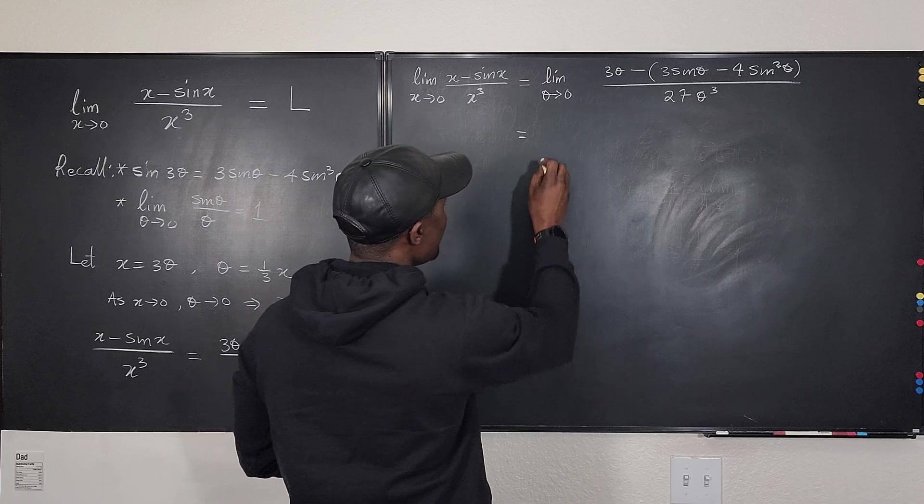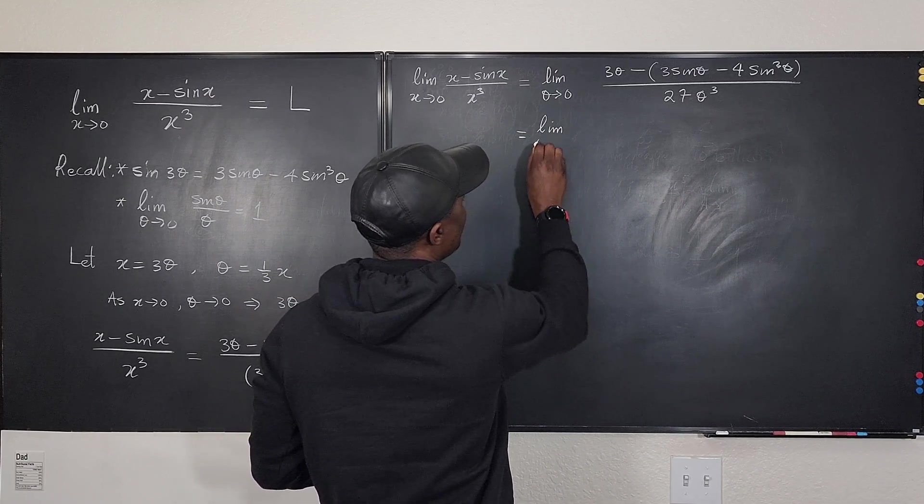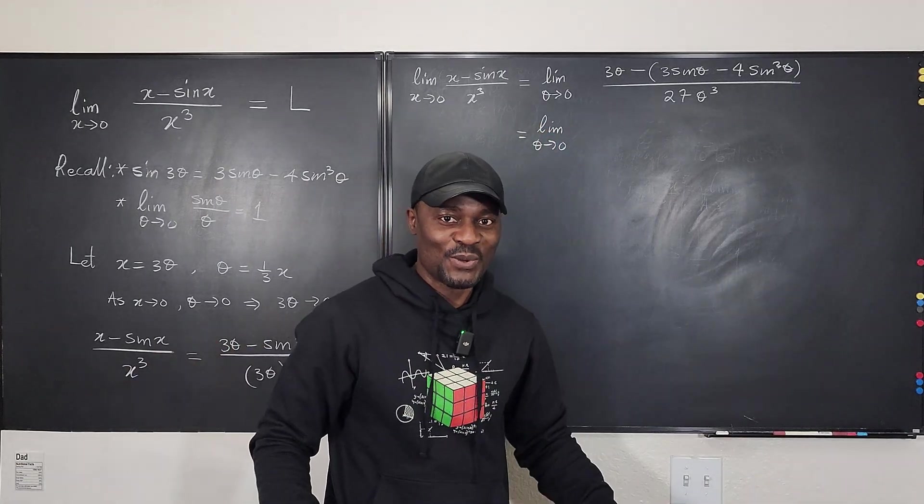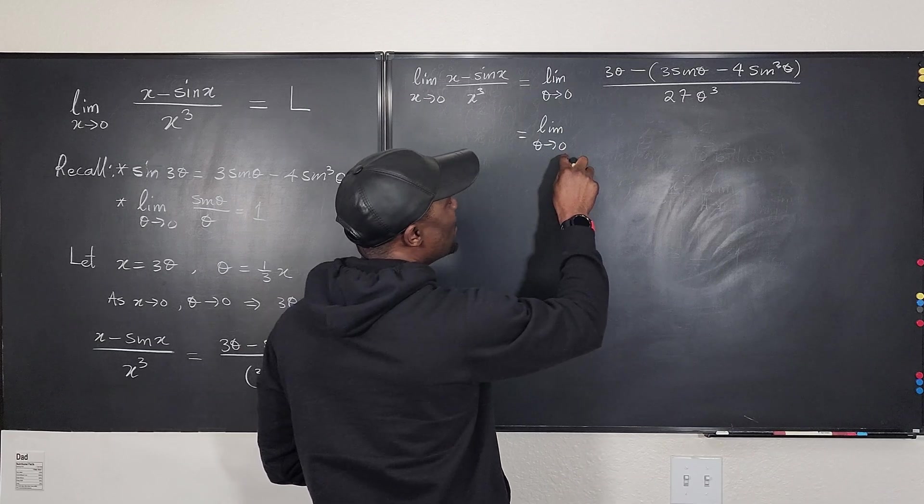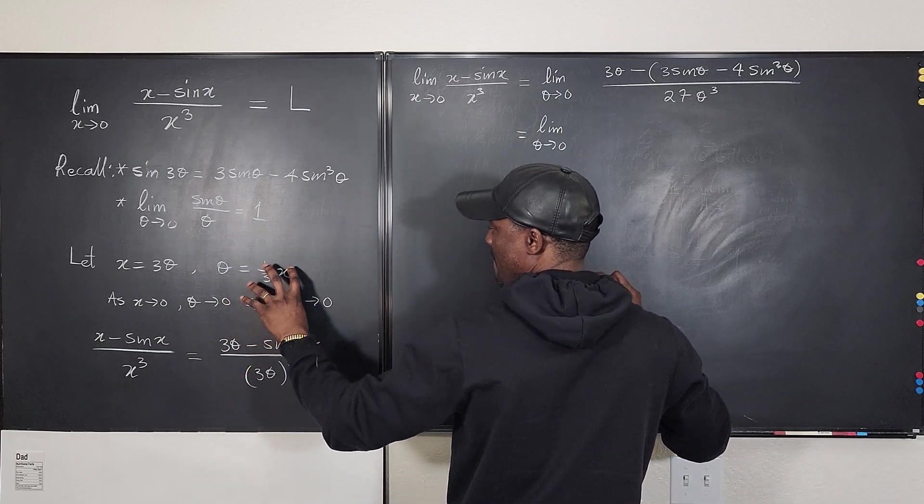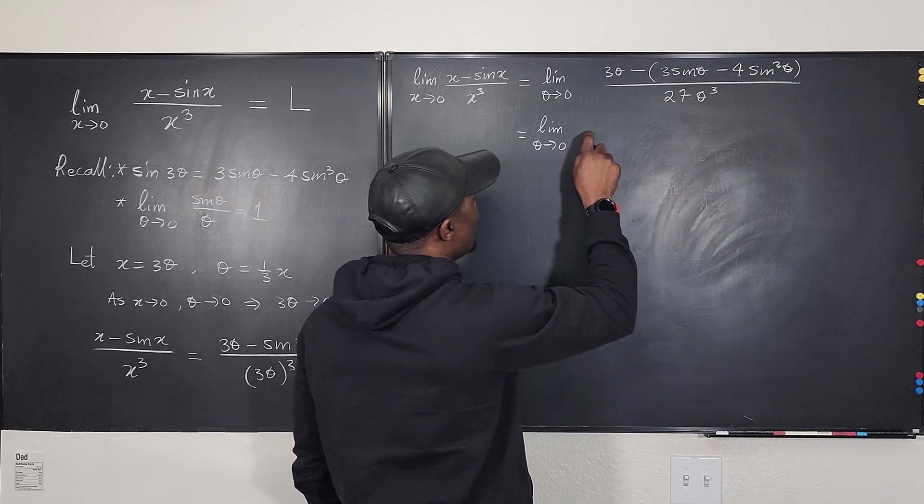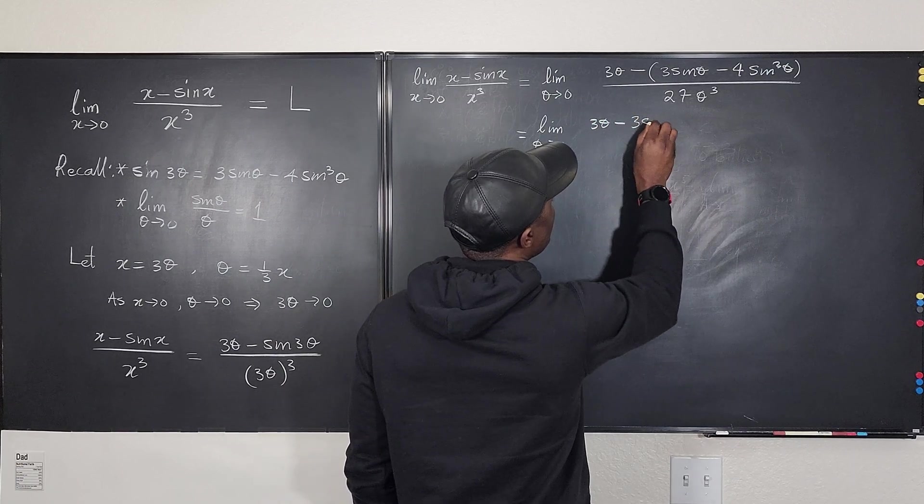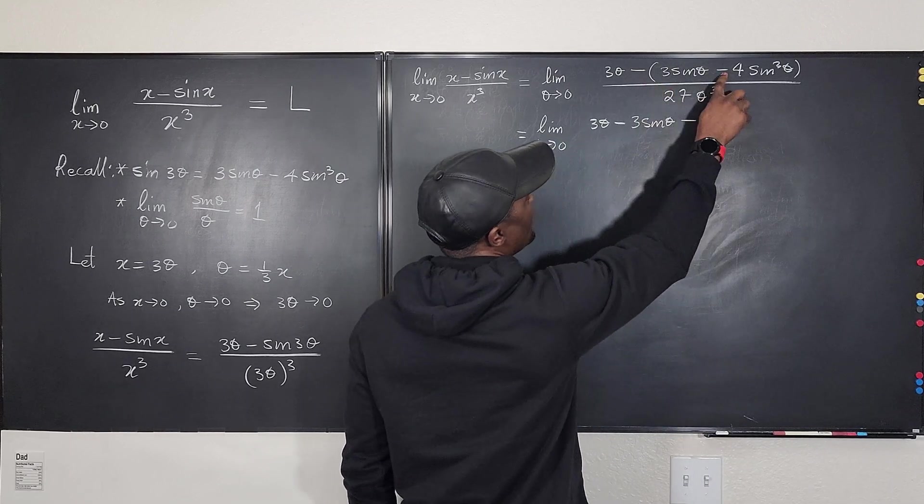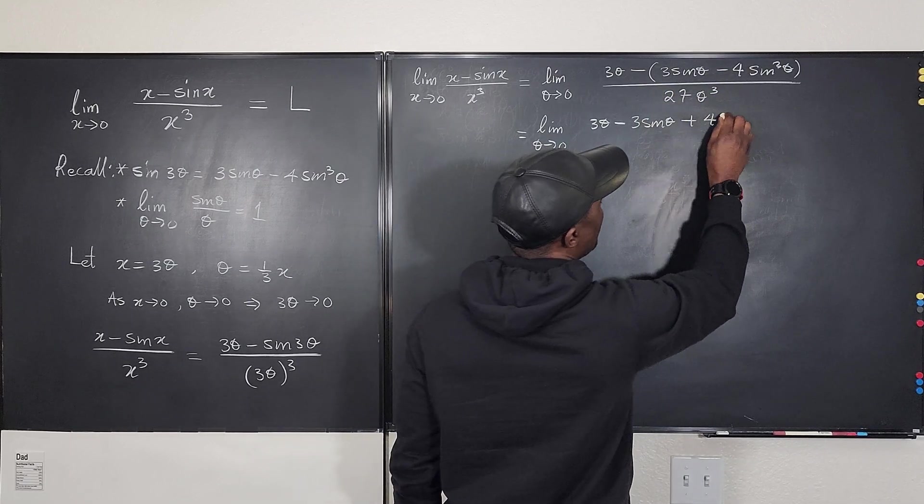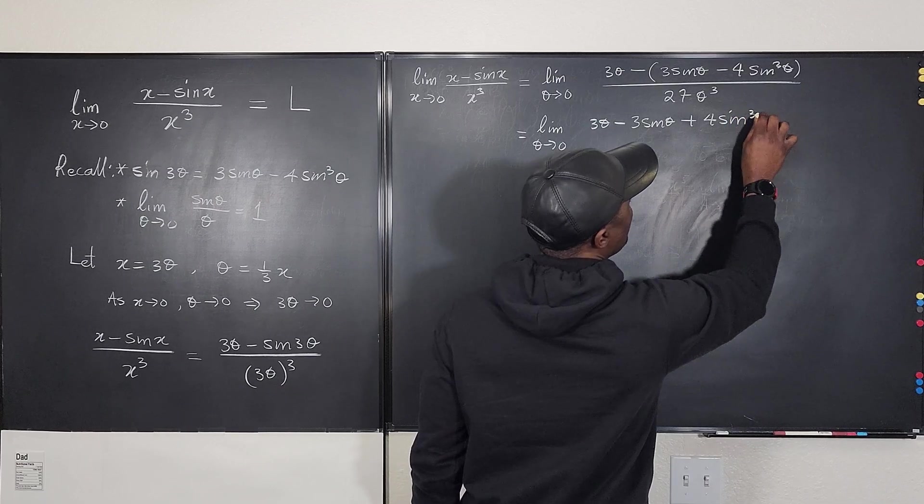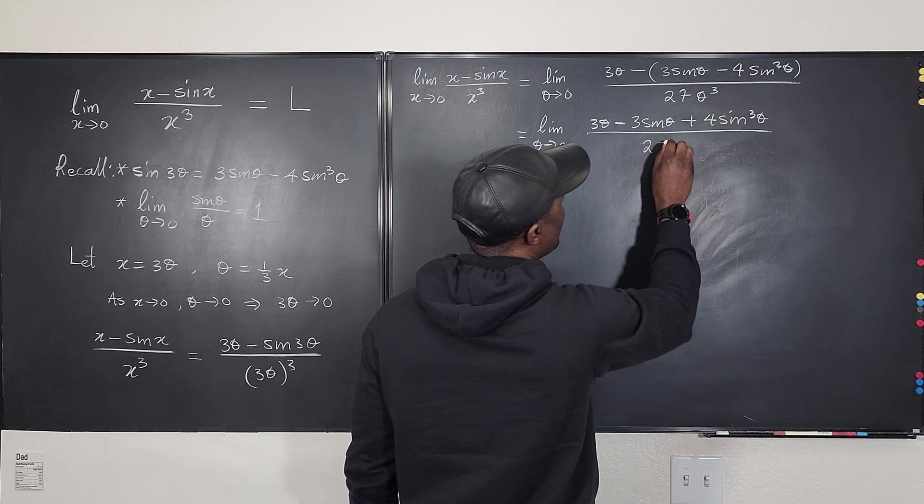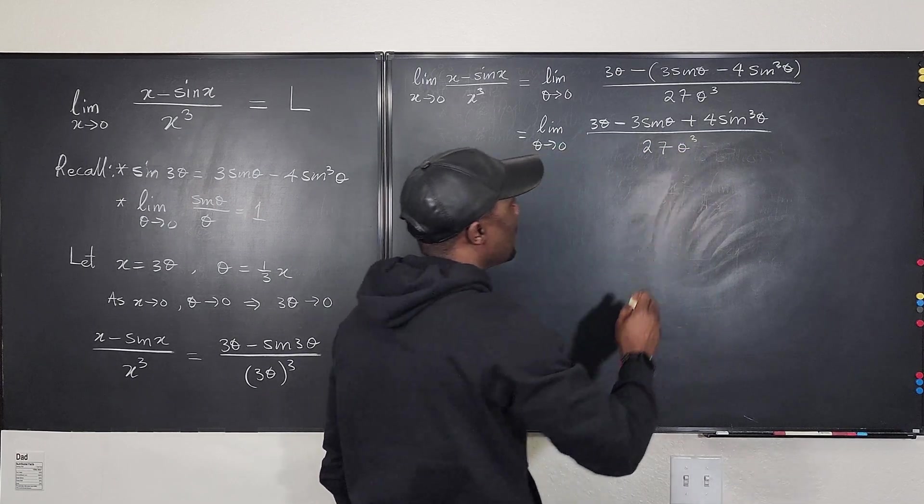At this point, this is equal to the limit as theta goes to 0. The limit as theta goes to 0 of 3 theta minus 3 sine theta. This is going to change this to plus 4 sine cubed theta, all divided by 27 theta cubed.